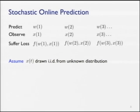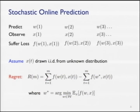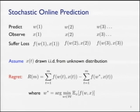We'll operate under the assumption that the observations are all drawn IID from some unknown distribution. We measure performance via regret: after M predictions and M observations, how well are we doing relative to a predictor that minimizes the expected value of the loss function with respect to that unknown distribution? We don't know W-star and want to find something close to it without accumulating too much regret.